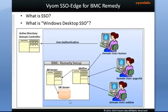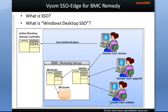Let's see how a typical BMC Remedy setup looks like in an environment. You have a mid-tier server, an AR server, and a database server. All these users, when they get onto their machines, authenticate against the Active Directory using their domain credentials. Once they are in, they can seamlessly access mid-tier in a secure manner without being shown the login page. This is Windows Desktop SSO for mid-tier. It saves users a lot of time by not having to provide their credentials again.